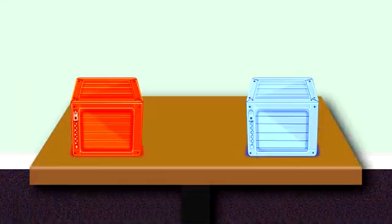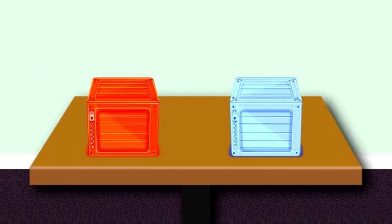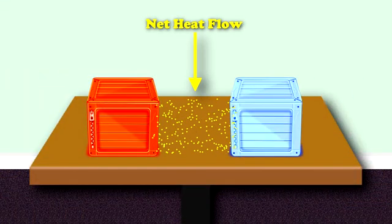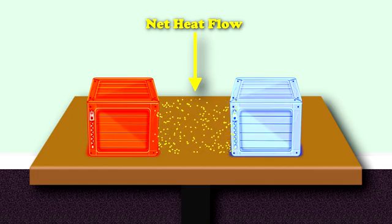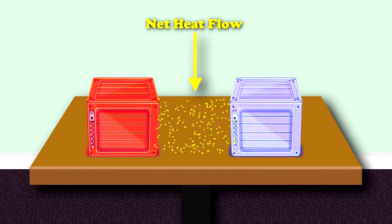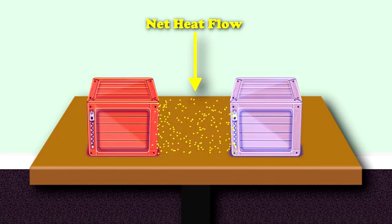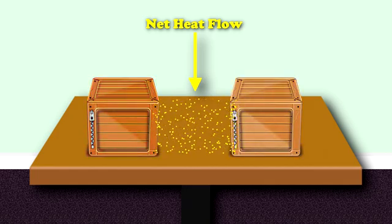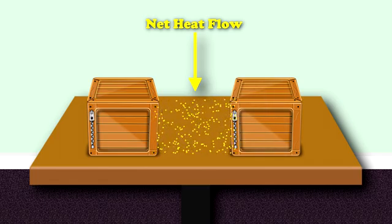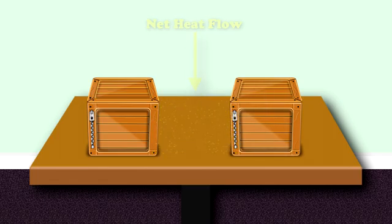If two things are sitting next to each other, then they'll swap energy. If one thing is hotter than the other, more energy will move to the colder thing. This will warm up the colder thing and cool off the hotter thing. The temperatures will slowly meet in the middle and the energy swap will balance out.